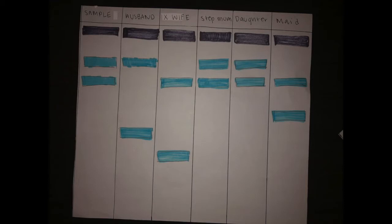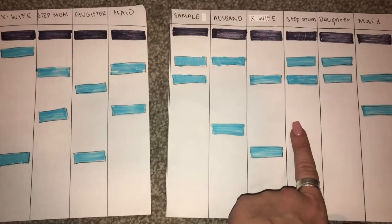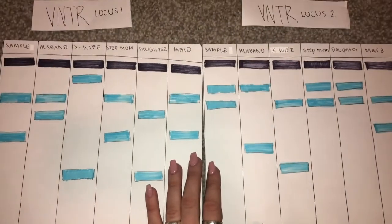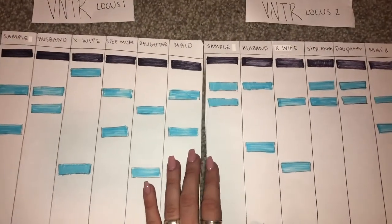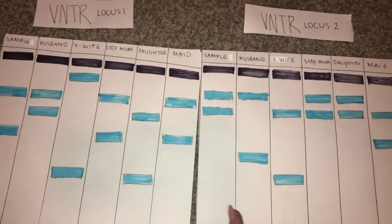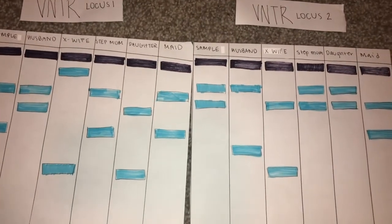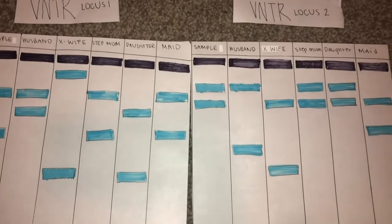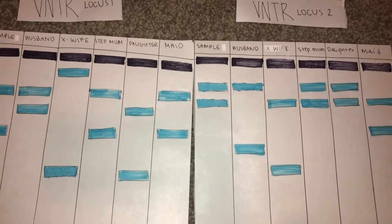The maid is also excluded, and we can conclude that the stepmom did the crime. After further looking into the crime we figured out that the stepmom had killed the husband for his life insurance to take all the money for herself. And that will conclude my last and final genetics mini exam video.